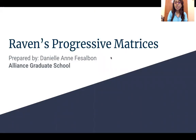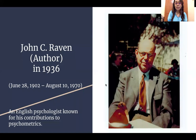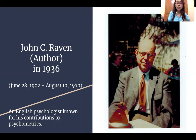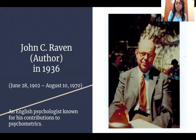So what is Raven's Progressive Matrices? I'll start by introducing the author. It was created by John C. Raven in 1936. John C. Raven is an English psychologist known for his contributions to psychometrics, and he is also a student of Charles Spearman.